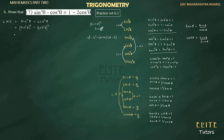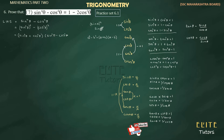So what we need to do is write a plus b times a minus b. Here a is sine squared theta and b is cos squared theta. So the first factor is sine squared theta plus cos squared theta, and the second factor is sine squared theta minus cos squared theta.